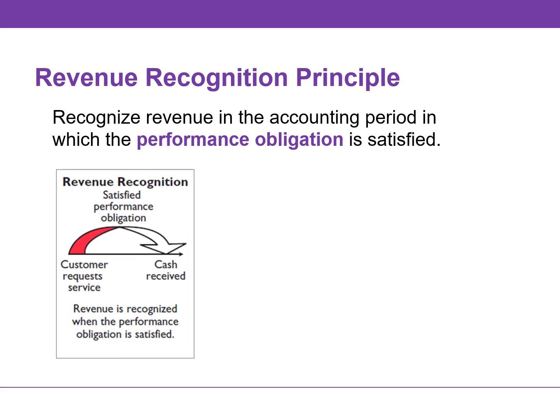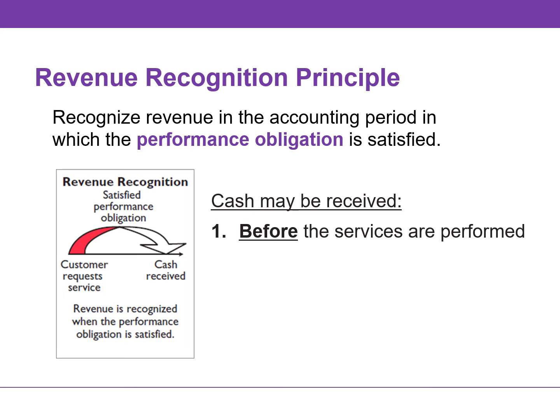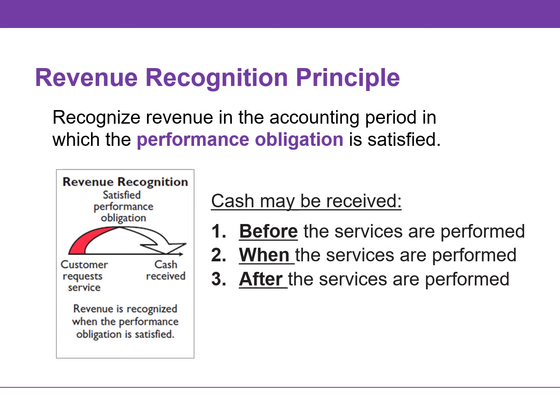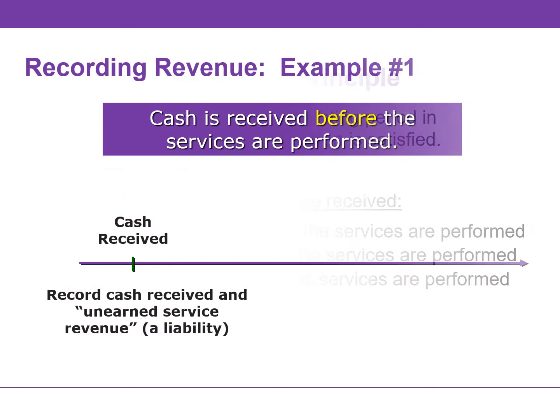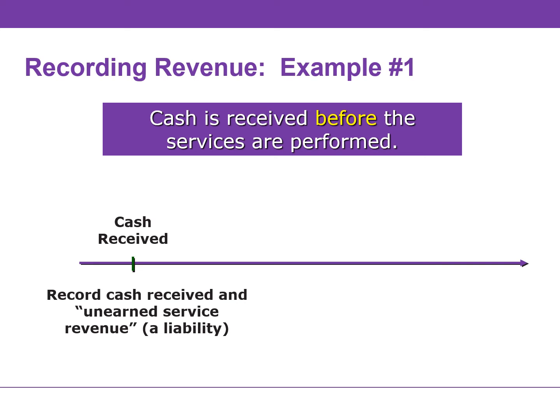Before we discuss the next two transactions, we need to talk about a concept from the next chapter. The Revenue Recognition Principle requires that companies recognize revenue in the accounting period in which the performance obligation is satisfied. This typically occurs when goods are delivered or services are performed. The other half of the transaction depends on when cash is received — cash could be received before delivery or performance of services, at the same time, or after. If cash was received before goods or services were delivered, we must record the cash when it's received, but we cannot record revenue because the services have not been performed. Instead, we record a liability called unearned revenue or unearned service revenue.